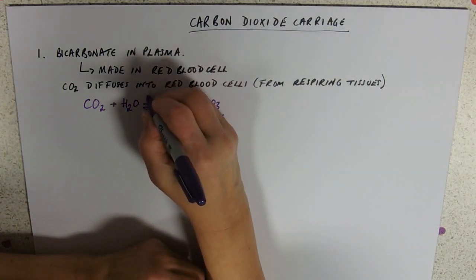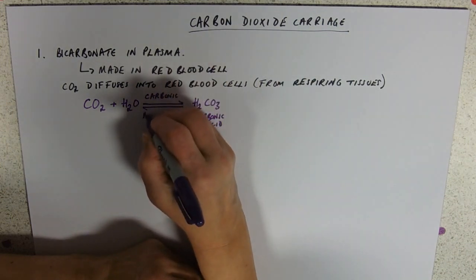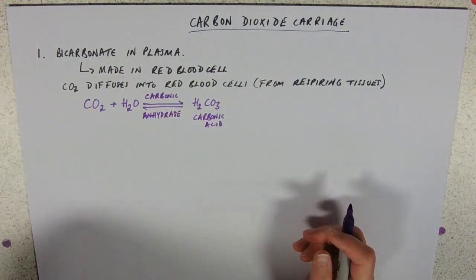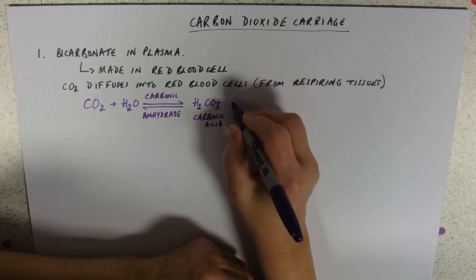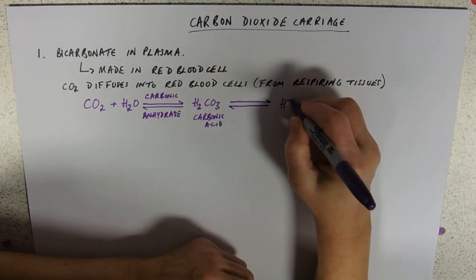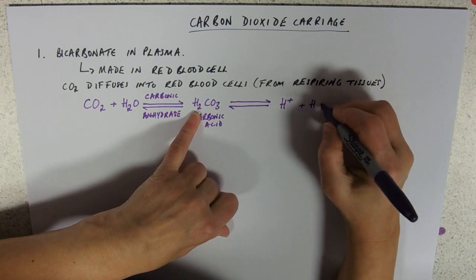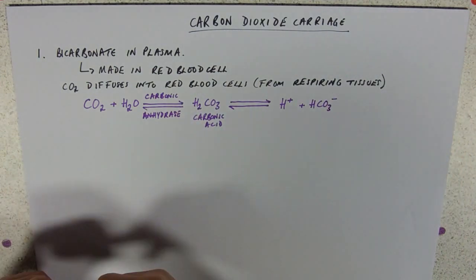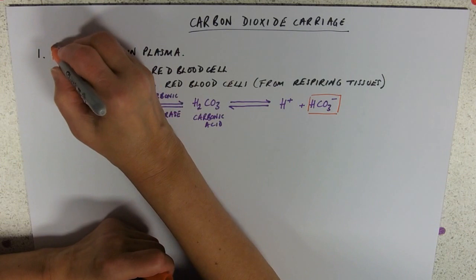And the enzyme that catalyzes that and makes it go faster and it does it in both directions is carbonic anhydrase. So what makes an acid an acid is the fact that it gives off hydrogen ions. So again a little reversible arrow. And if we remove a hydrogen ion positively charged from H2CO3 what we get left with is HCO3 with a minus charge. And it's this stuff that is bicarbonate.